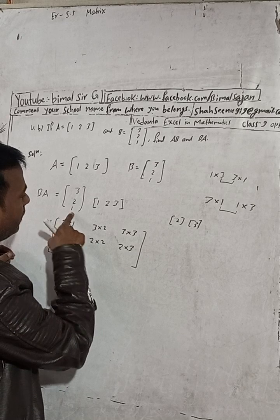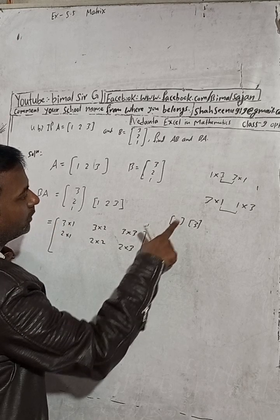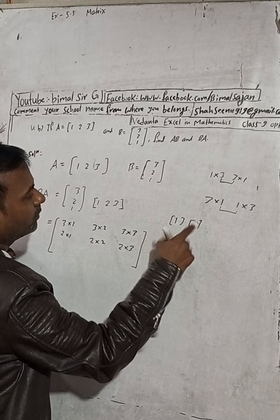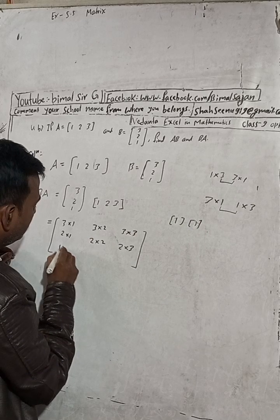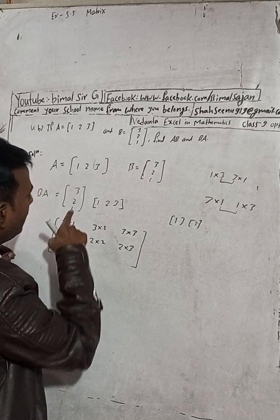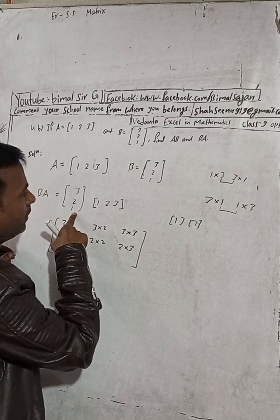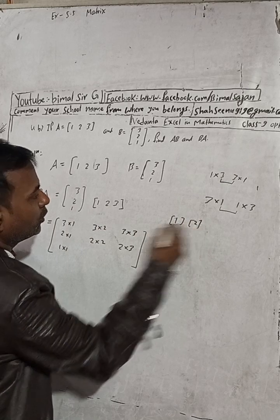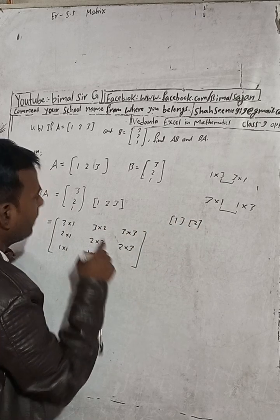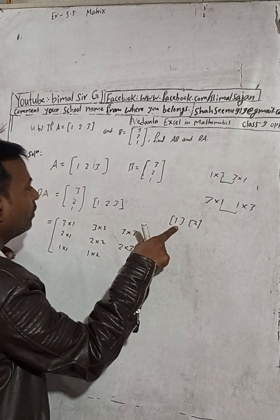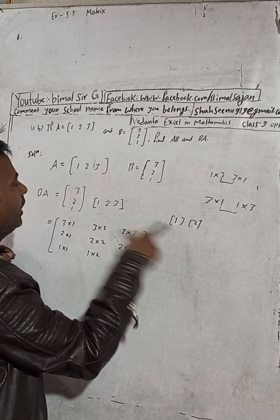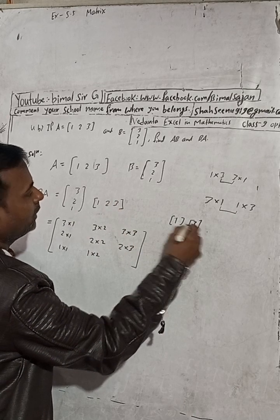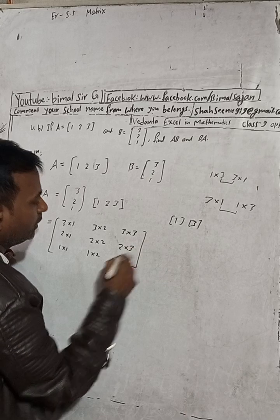Now take the third row. Third row is 1, and first column: 1×1. Third row, second column: 1×2. Third row and third column: 1×3.